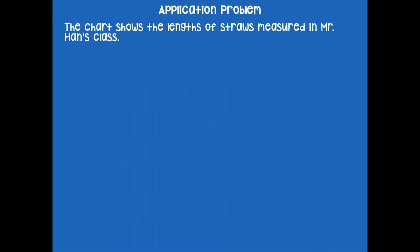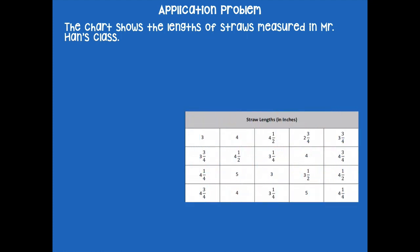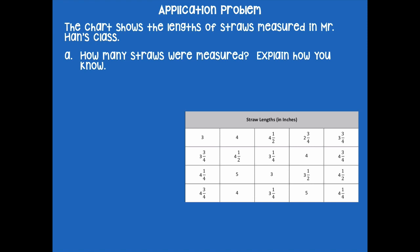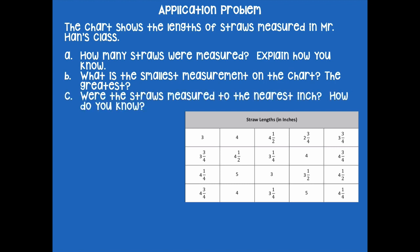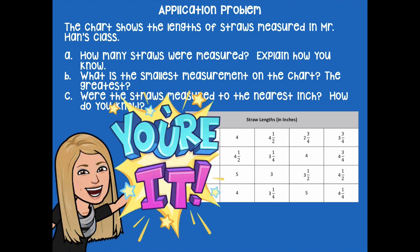All right friends, we're going to start with our application problem. It says the chart shows the length of straws measured in Mr. Hahn's class. We're going to answer some questions: how many straws were measured and explain how you know; what is the smallest measurement on the chart and the greatest; and were the straws measured to the nearest inch? How do you know? Pause the video, look at the data in that chart, answer those three questions, and then click play when you're ready to go over it together.